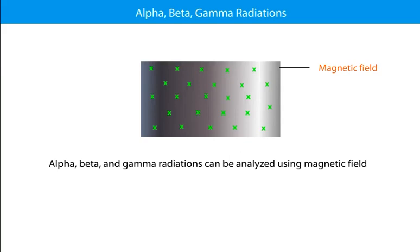Alpha, Beta, Gamma radiations. Alpha, Beta and Gamma radiations can be analyzed using magnetic field.